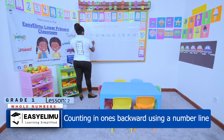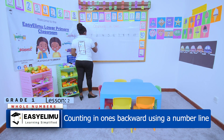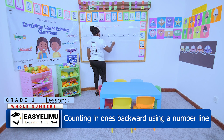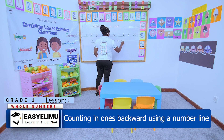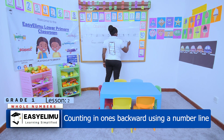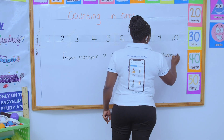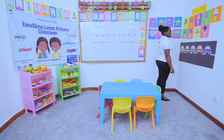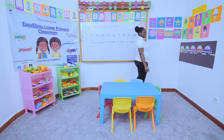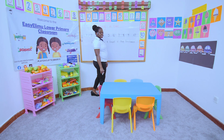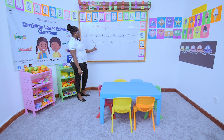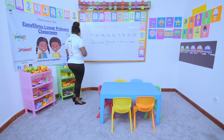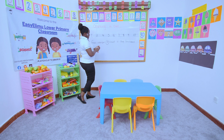The question is: from number nine, count six steps backward. When someone says move in the forward direction, you move facing that direction, but we are counting in the backward direction. So the question says start from number nine — that is our starting number — and move six steps backward.